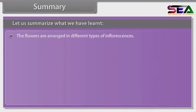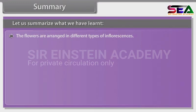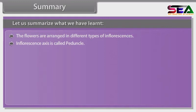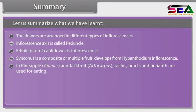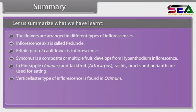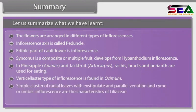Summary: The flowers are arranged in different types of inflorescences; the inflorescence axis is called peduncle. The edible part of cauliflower is inflorescence. Syconus is a composite or multiple fruit that develops from hypanthodium inflorescence. In pineapple (Ananas) and jackfruit (Artocarpus), rachis, bracts, and perianth are used for eating. Verticillaster type of inflorescence is found in Ocimum. Simple cluster of radical leaves with exstipulate and parallel venation, and cyme or umbel inflorescence are the characteristics of Liliaceae. In family Gramineae, the inflorescence is a spikelet.